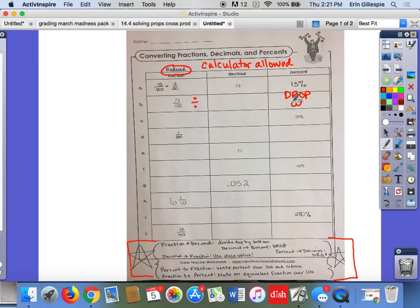back two spots. So your decimal, whether you do 73 divided by 100 or use drop, you should get 0.73, 73 hundredths. Take a look at C.